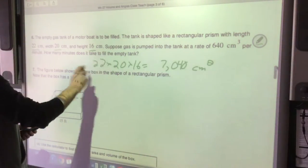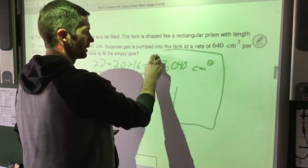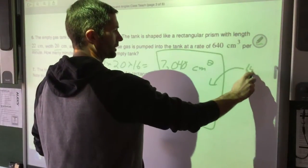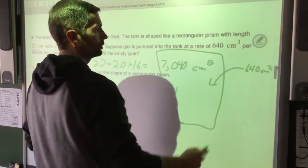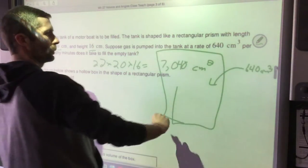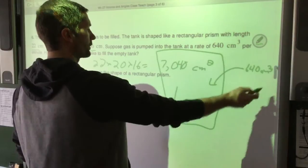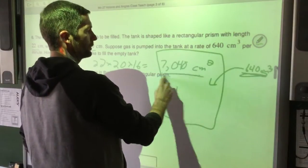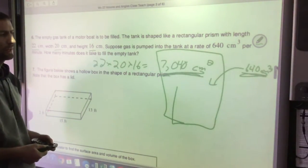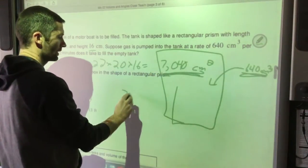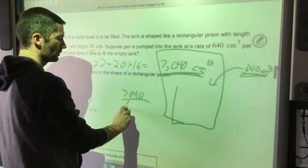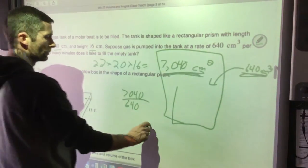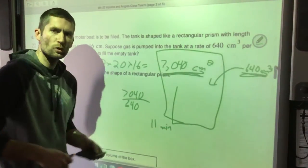Suppose gas is pumped into the tank at a rate of 640 cubic centimeters per minute. So I'm putting 640 centimeters cubed each minute. After one minute, we got that much in, after two minutes double that, three minutes. Keep adding. We're seeing how many of these fit into this. That's my problem, how long it takes to fill that tank. So I'm seeing 7,040 divided by 640. The division problem gives me 11. So it takes 11 minutes to fill it up, which makes sense.